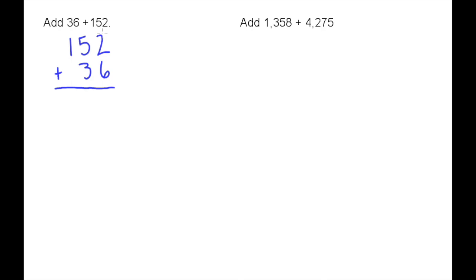We line them up and simply add straight down. I add 2 and 6 which gives me 8. Then I add 5 and 3 which gives me 8. I have nothing in the hundreds column for 36, so it's just 1 plus 0 is 1. So 36 plus 152 equals 188.